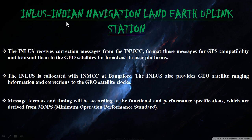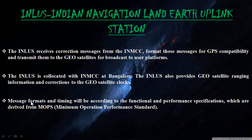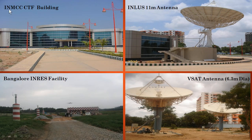The Indian Navigation Land Uplink Station (INLUS) receives correction messages from the INMCC, formats those messages for GPS compatibility, and transmits them to geostationary satellites for broadcast to user platforms. The INLUS is co-located with the INMCC at Bangalore. INLUS also provides geostationary satellite ranging information and corrections for geostationary satellite clocks. Message formats and timing are according to the Functional Performance Specification derived from MOPS — Minimum Operation Performance Standard. The facility includes an 11-meter antenna and a VSAT antenna.